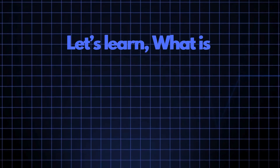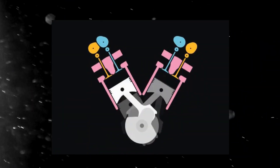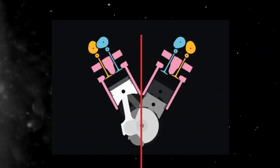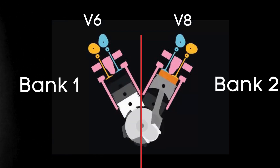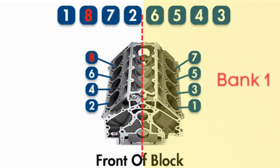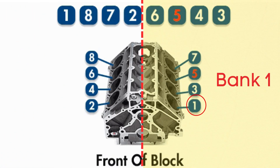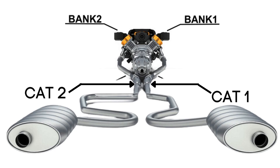Now let's learn what the Bank 1 catalytic converter is. In engines with multiple cylinder banks like V6 or V8 engines, you'll have two sides or banks of cylinders. Bank 1 typically refers to the side of the engine where cylinder 1 is located, and Bank 2 is on the opposite side. Each bank has its own exhaust line, and each exhaust line is equipped with a catalytic converter.